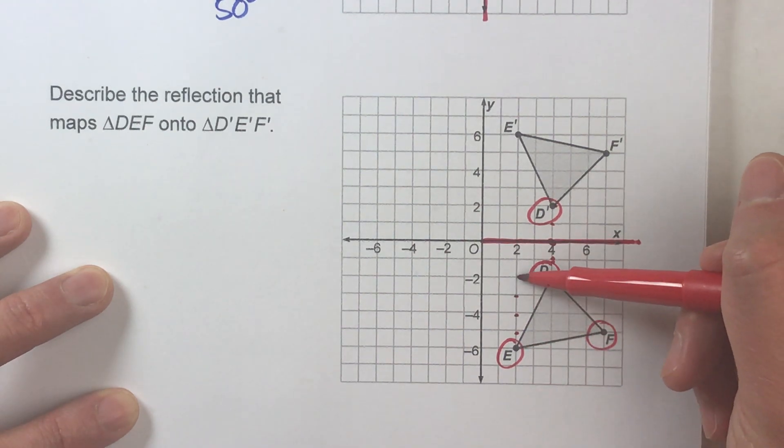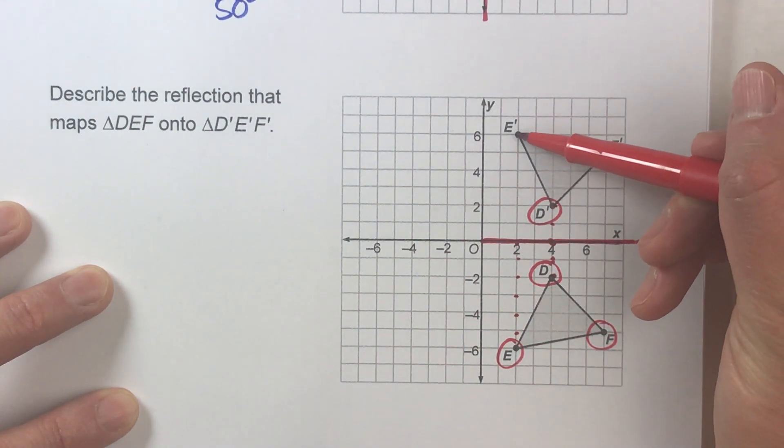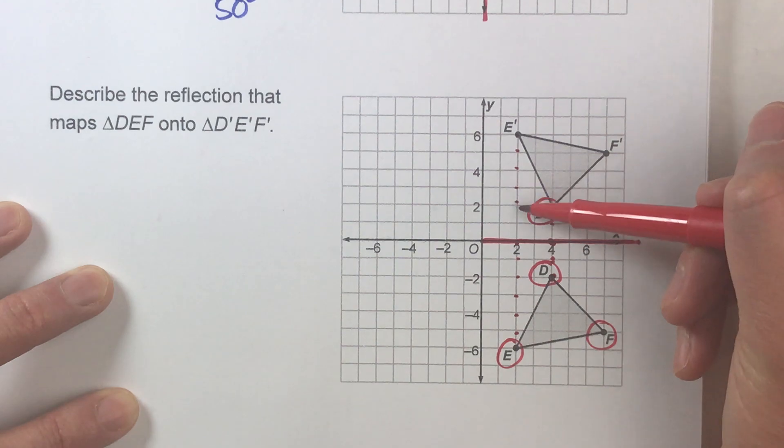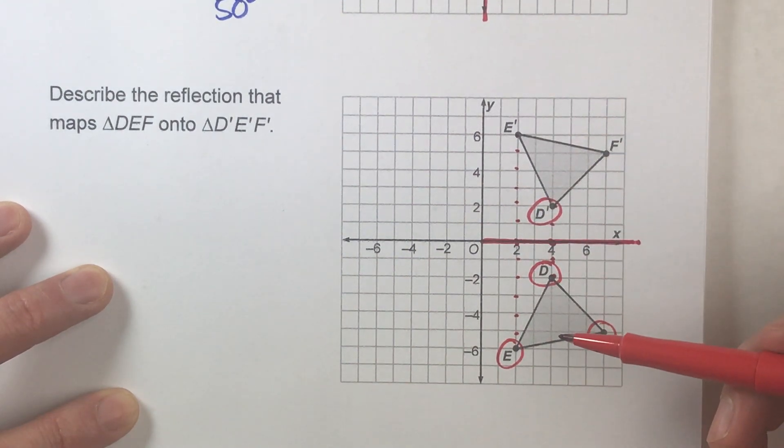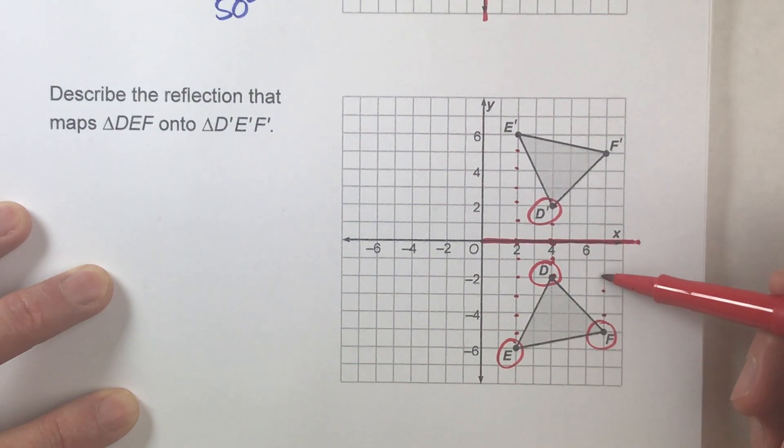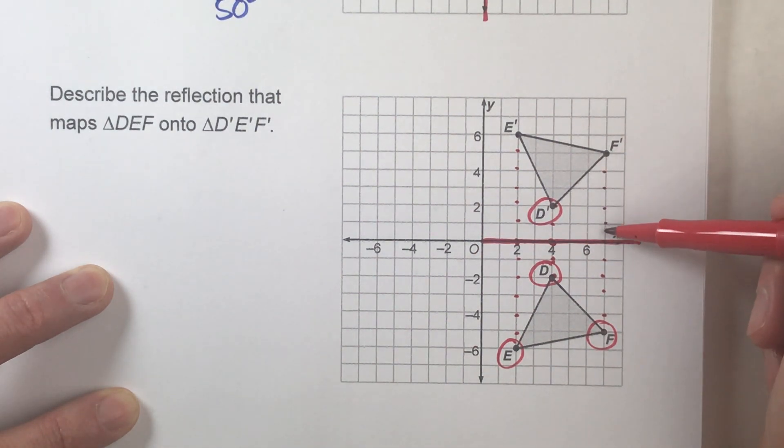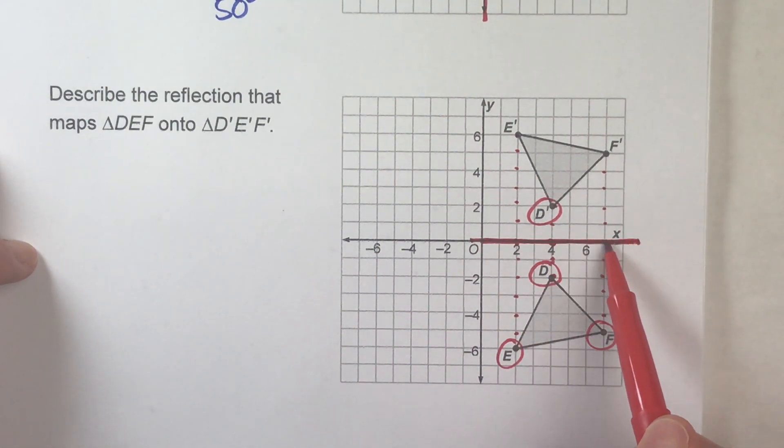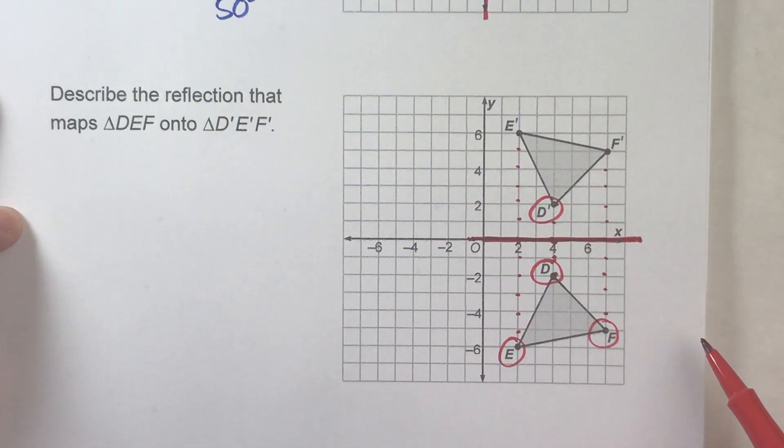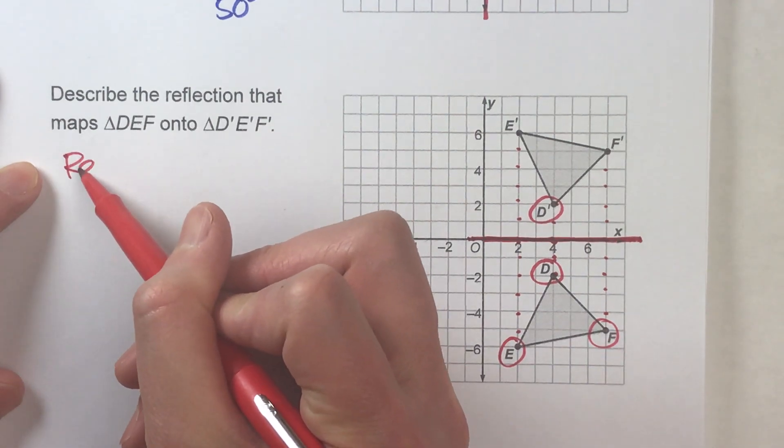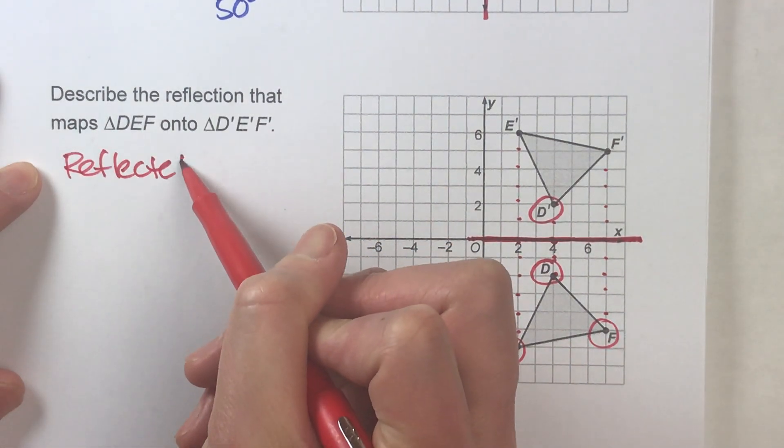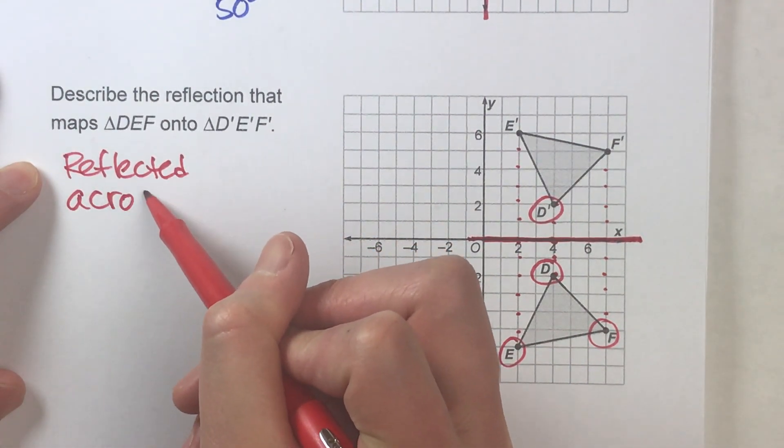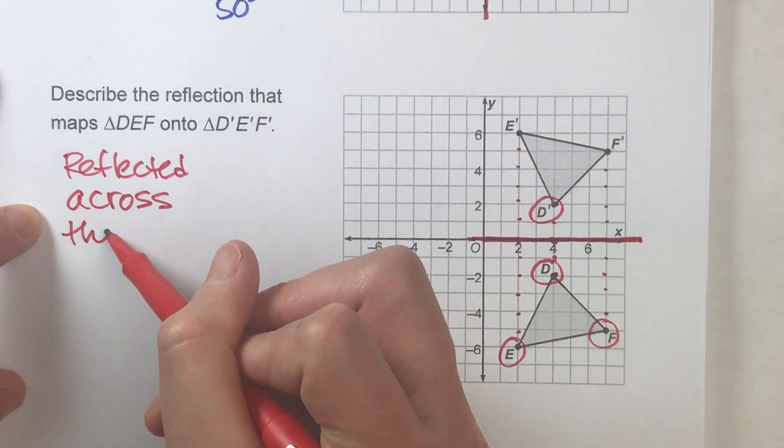Same with E and F. E is one, two, three, four, five, six steps away. E prime is one, two, three, four, five, six steps away on the other side. And F, one, two, three, four, five steps away. F prime is one, two, three, four, five steps away also. So I think we found it.